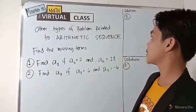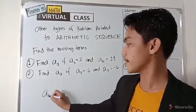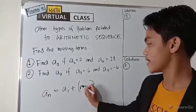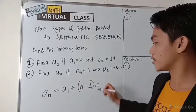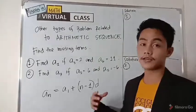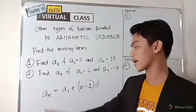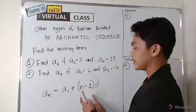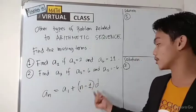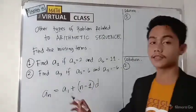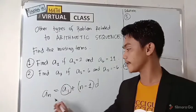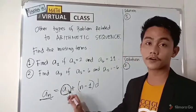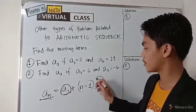Remember that the nth term is: a sub n equals a sub one plus the difference of n and one times the common difference. In the Philippines we read this as: a sub n equals a sub one plus the quantity n minus one times the common difference. This means we prefer to find any term in an arithmetic sequence given the first term and the common difference.